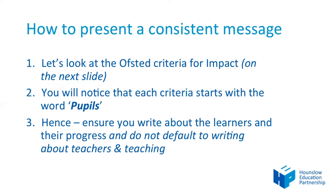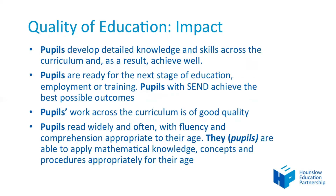Look at the criteria for curriculum impact. As you'll see in the next slide — and in part D of the subject leaders resource files where the three I's are all written large — there are four bullet points in the quality of education impact criteria, and each one of them starts with the learners, with pupils. There's a big clue there: whatever I'm going to write about the impact in my subject is front and centre about the pupils.